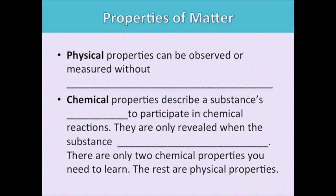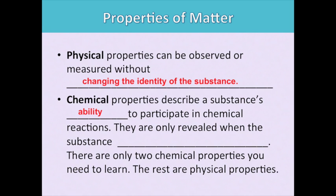Properties of matter are of two kinds. Physical properties are properties you can observe and measure without changing the identity of the substance — you can look at them and you won't change the thing. Chemical properties describe a substance's ability to participate in chemical reactions, so you're only going to see them if the thing is having a chemical reaction. There are only two chemical properties you need to learn: flammability and reactivity. Everything else is a physical property of matter.